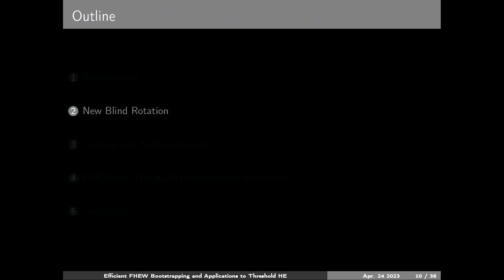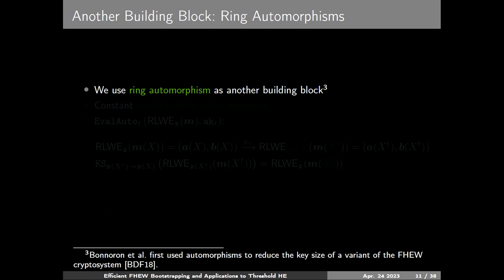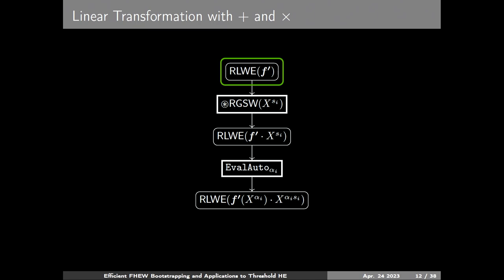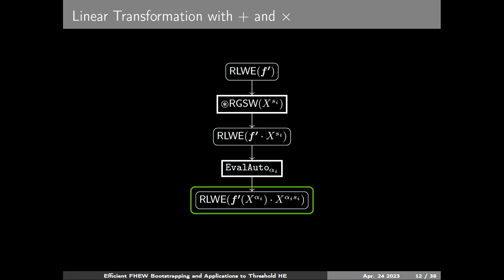We propose another blind rotation algorithm without such workarounds by introducing another building block: ring automorphism. We use ring automorphism to perform constant multiplication on the exponent. Eval_auto(t) takes two inputs — RLWE of m and an automorphism key AK — and the result is RLWE of m·x^t, involving one key switching. We are given an initial ciphertext of RLWE of F-prime, and then we can add s_i to the exponent by performing RGSW multiplication. Then we do eval_auto by alpha_i to multiply alpha_i in the exponent. By taking some proper F-prime we have F times x^(alpha_i · s_i), and by repeating this process we can perform the decryption in the exponent — that is blind rotation.